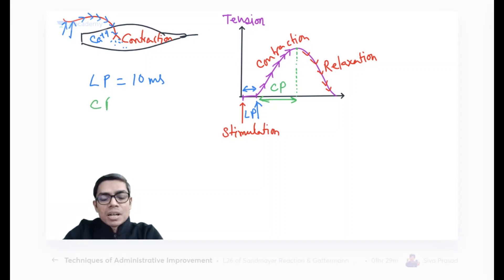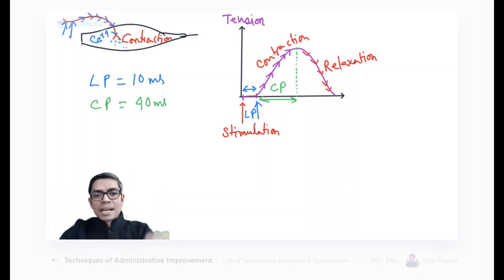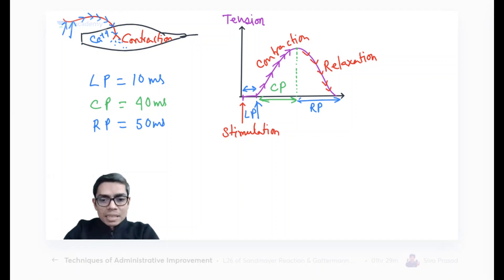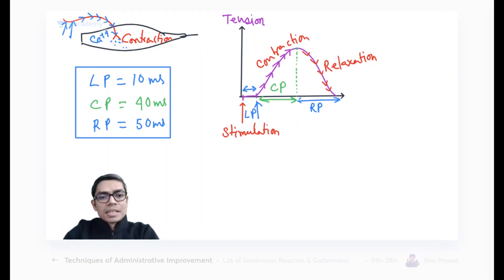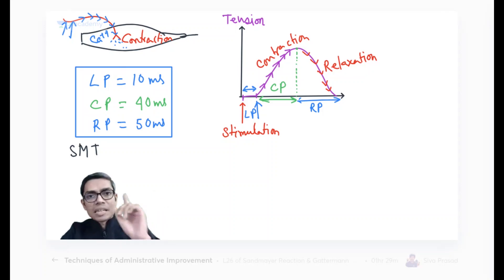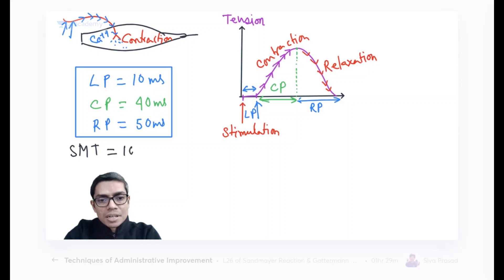The contraction period of this gastrocnemius muscle is generally 40 milliseconds — this is the normal value. Then from the end of contraction, the time period up to full relaxation is the relaxation period (RP), which is generally 50 milliseconds — a little more than the contraction period. Adding all these together gives 100 milliseconds. A simple muscle twitch — twitch means a single contraction — so SMT equals 100 milliseconds.